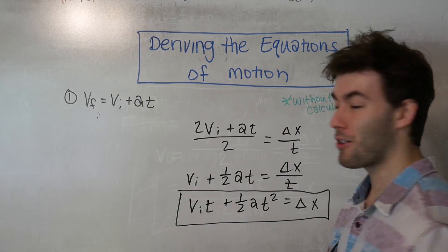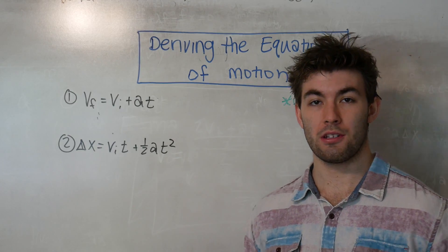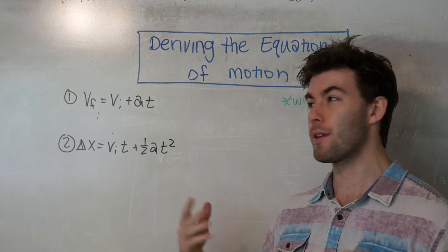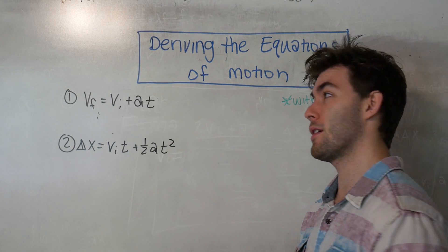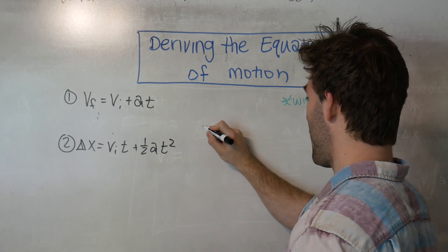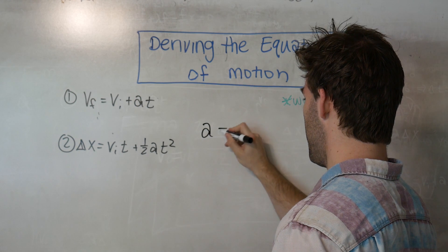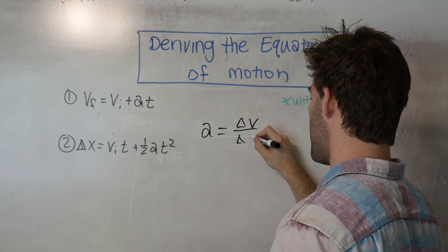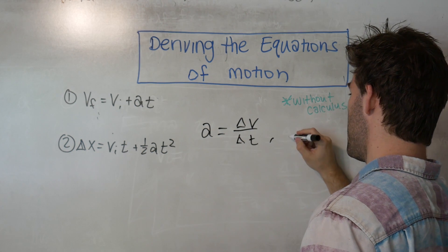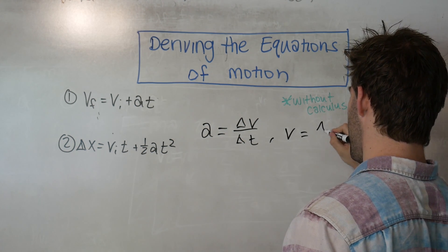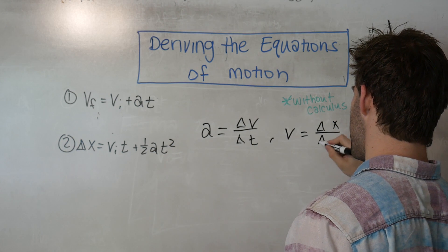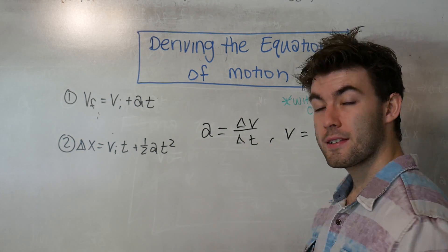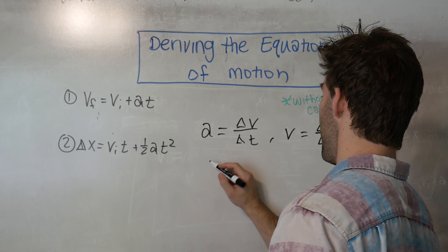Cool, making progress. Now in order to define the third and final equation of motion, we're going to have to pull from bits and pieces of things we derived previously. So we know that the acceleration can be defined as a change in velocity over a change in time. And we also know that velocity is defined as a change in position over a change in time. Again, reminder that these are average quantities. We can solve for delta T on both sides.